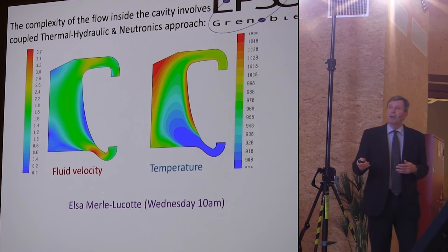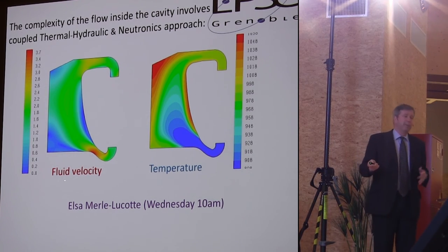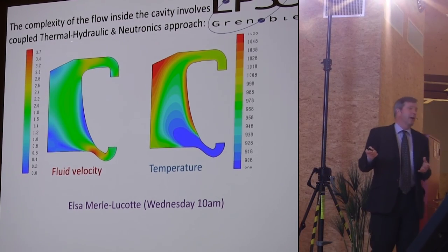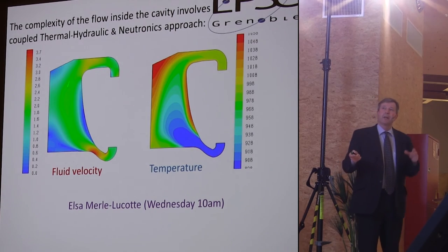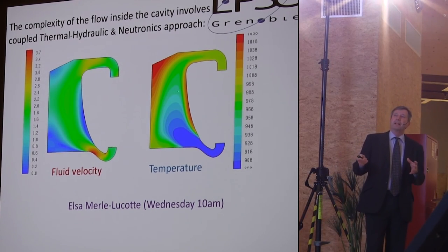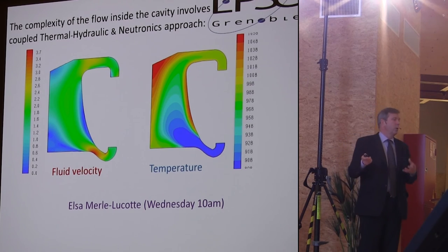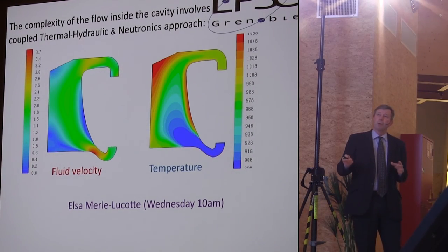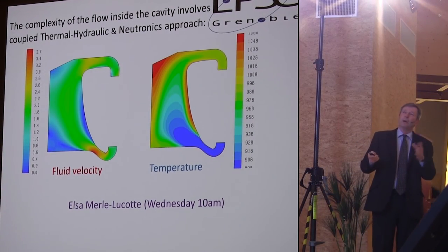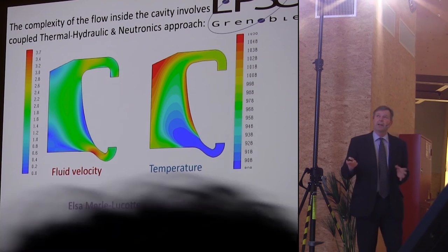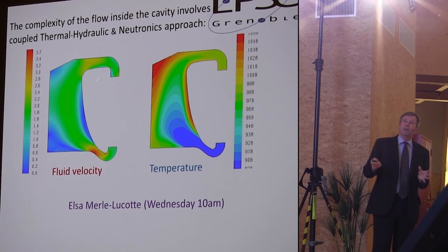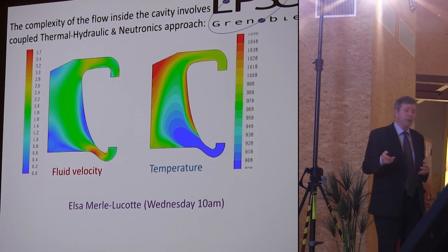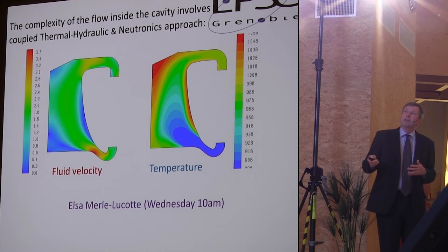Here's some modelling which Elsa Mel-Lukot has been involved in, which involves coupled thermal hydraulic and neutronics. These velocity and temperature fields here have worked through all of the neutronic reactions, the way that heat gets generated within the system and the hydrodynamics of this particular design. This is design work to try to optimize the shape of the reactive vessel, perhaps to maximize the amount of convective flow through the system.